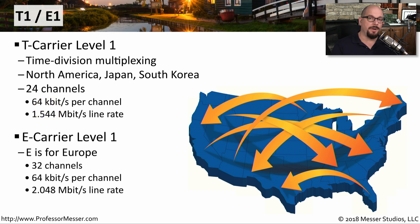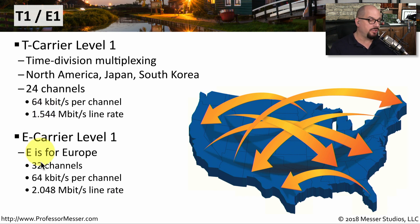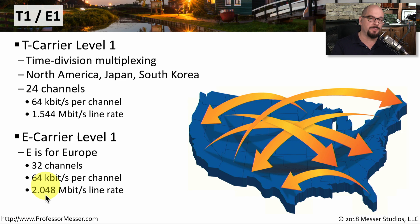A similar wide area connection in Europe is the E1. The E1 is slightly different — it has 32 channels, and each channel can support 64 kilobits per second, giving a total line rate of 2.048 megabits per second.